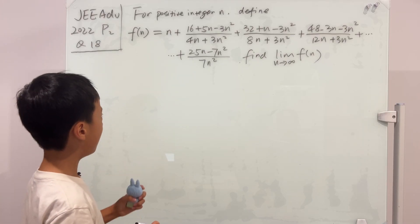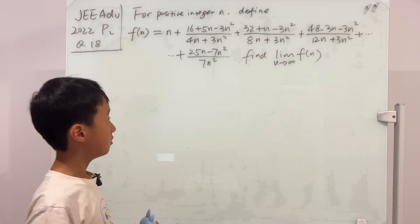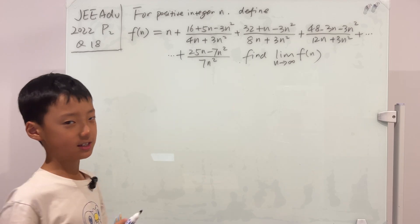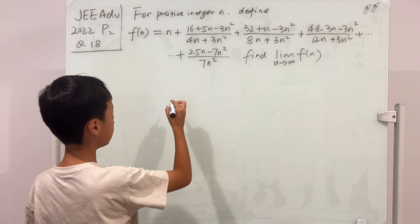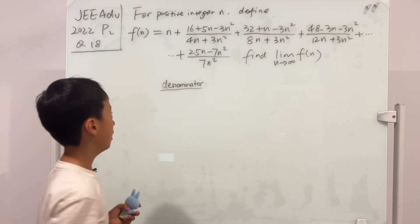Well, to make a sum, we need a pattern, right? But this doesn't seem like there are patterns. Well, why don't we do the denominator first, because hint, it's easier.